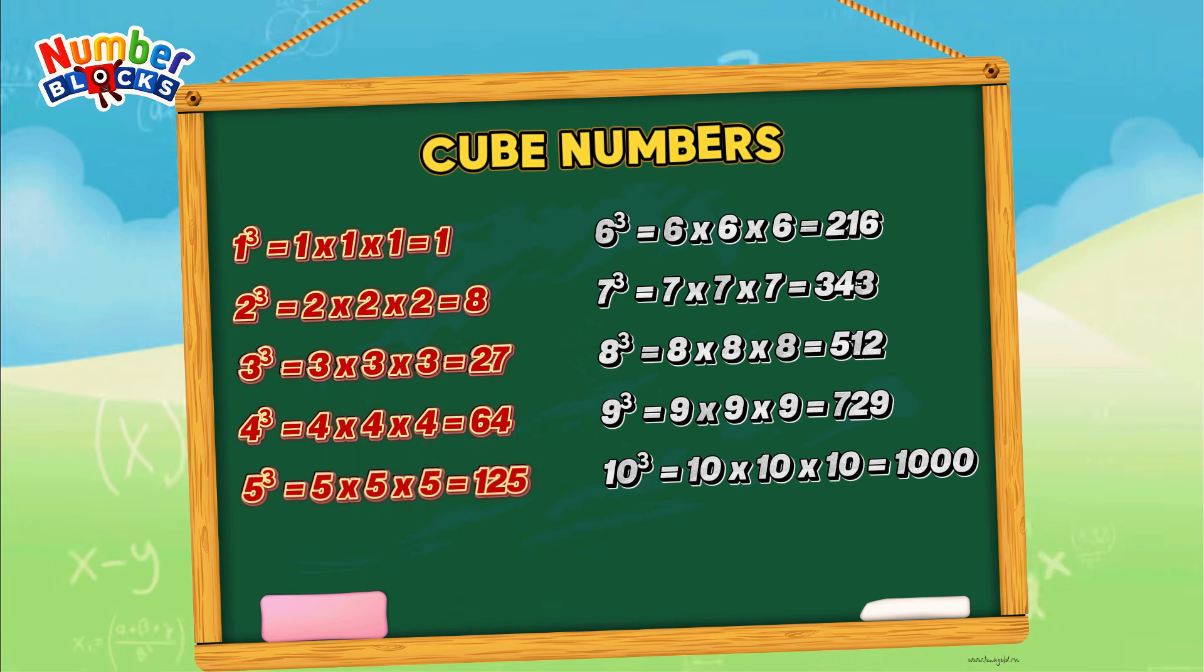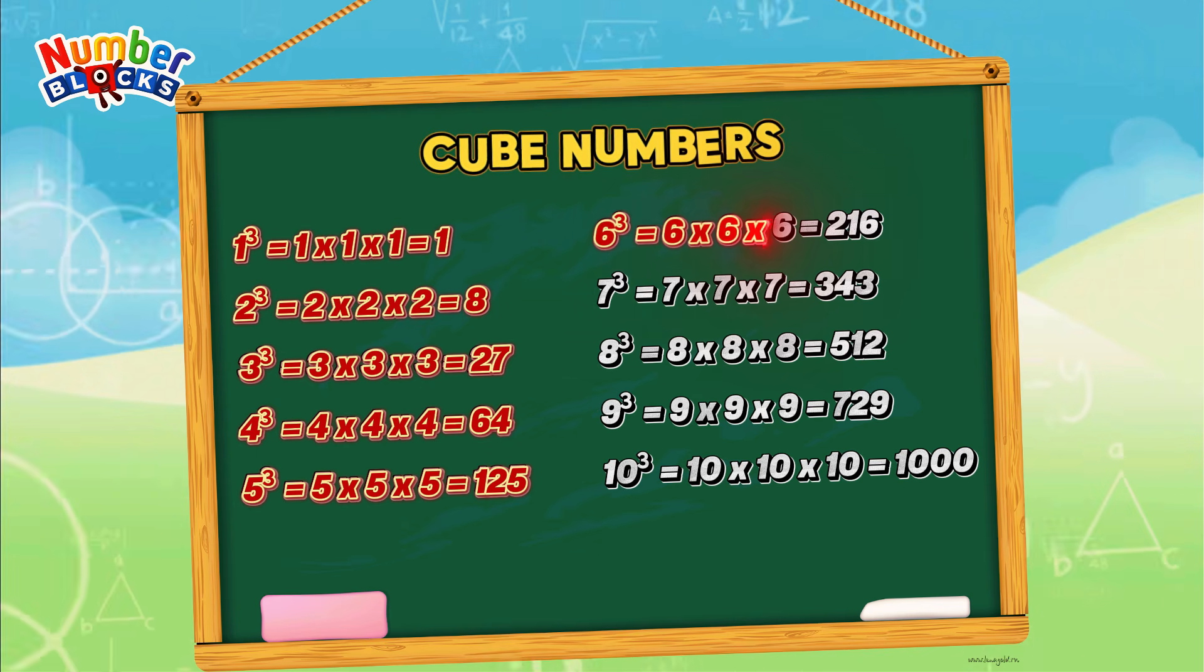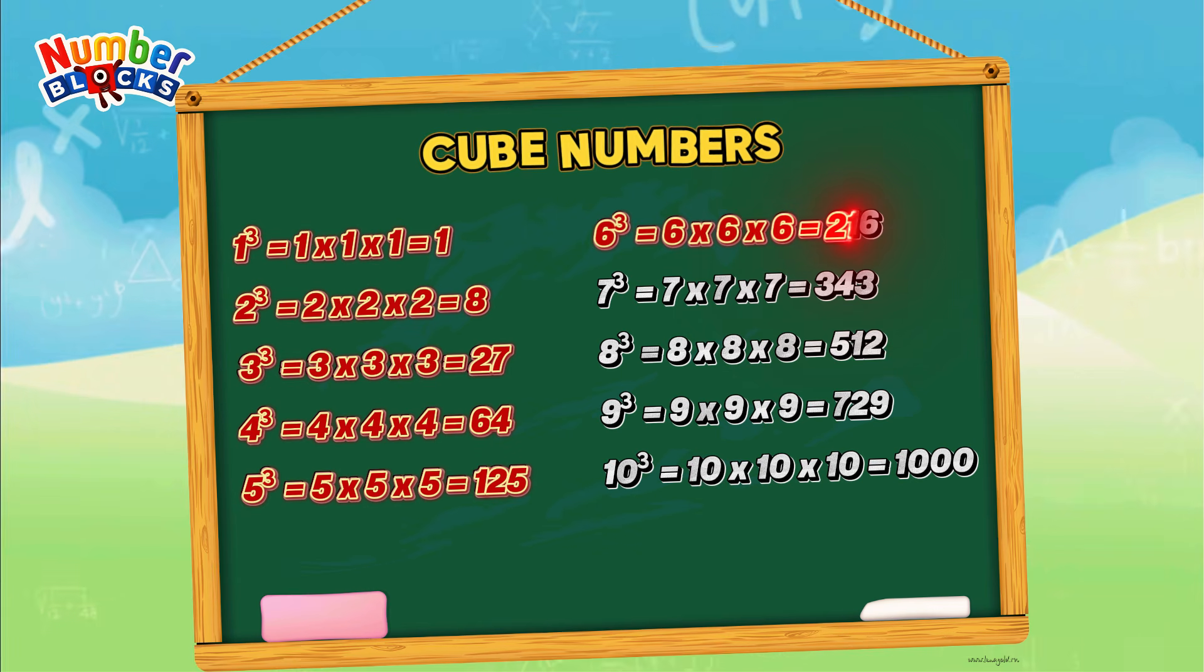5 cube, or 5 times 5 times 5, equals 125. 6 cube, or 6 times 6 times 6, equals 216.